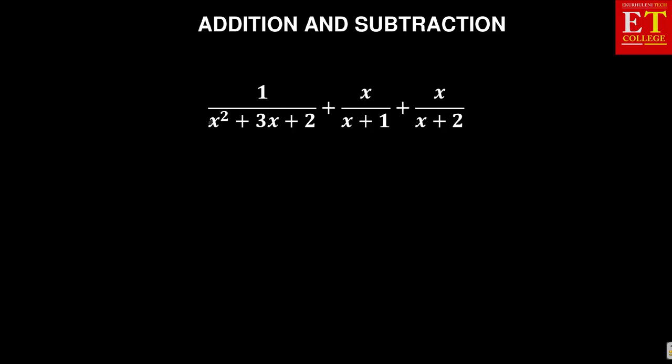The one with 1 over x² + 3x + 2, and then we have the simplest one, which is x over x + 1 already simplified, and x over x + 2. These are already simplified. But the one which gives a bit of challenge is the x² + 3x + 2. In which case, what you need to do is to first simplify. What are you supposed to do with the one which is at the bottom? You are supposed to factorize.